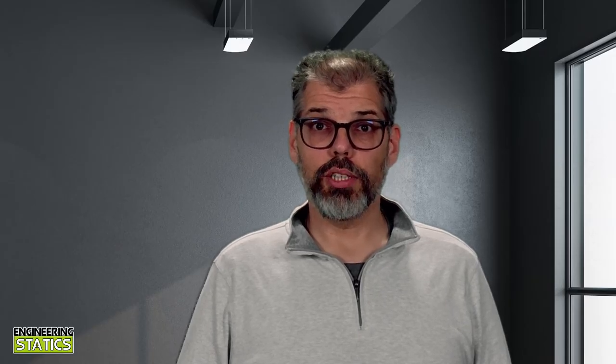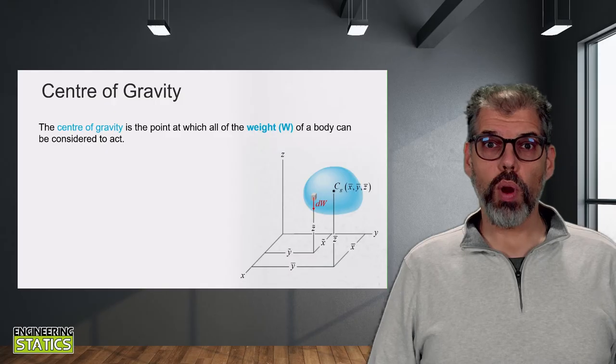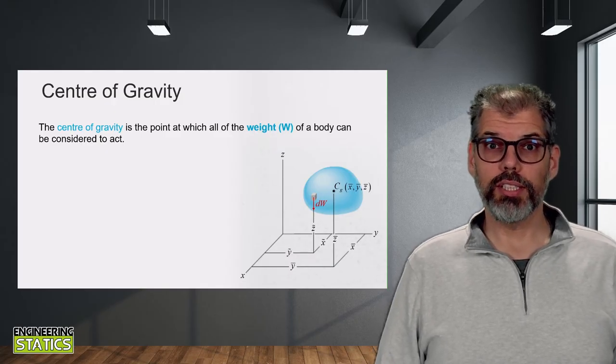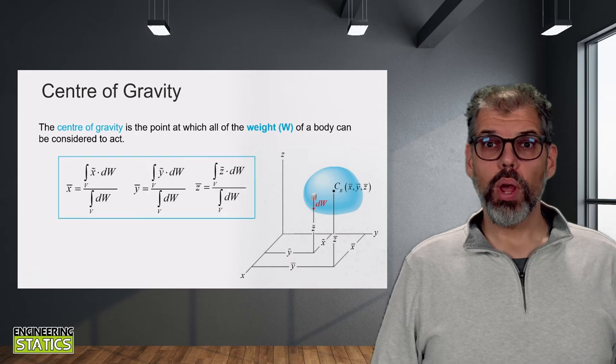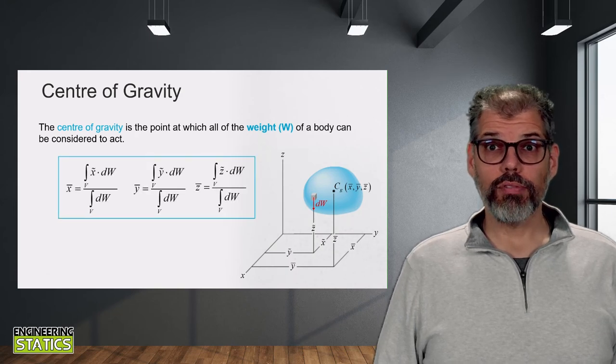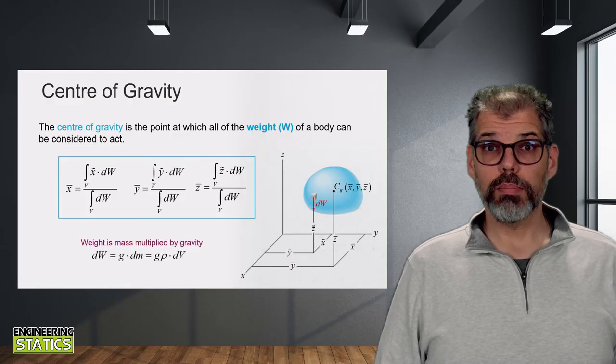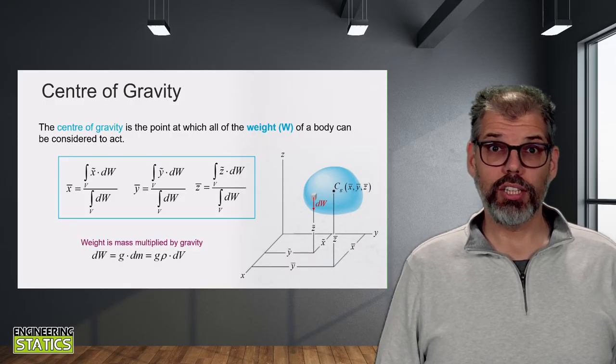We are interested in analyzing forces, and again, force is equal to mass times acceleration. So what we often are interested in is where the resultant force of a body is acting, the mass times acceleration. We call this point the center of gravity, and it is the point at which all of the weight of a body can be considered to act. So the weighing factor for our averaging changes from mass to weight, where the weight is simply mass times gravitational acceleration.